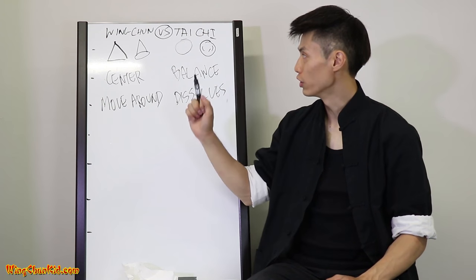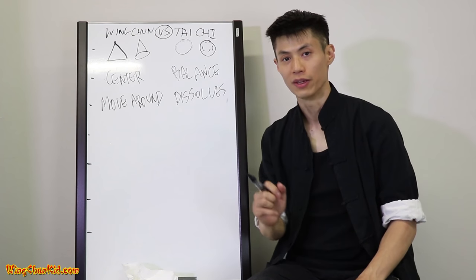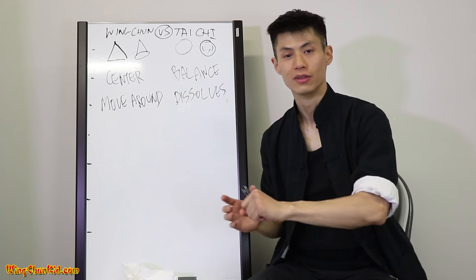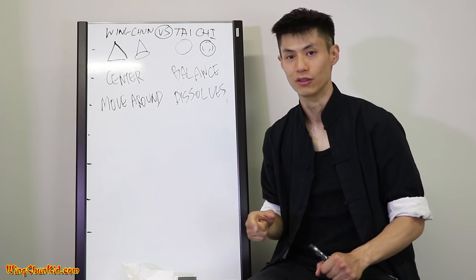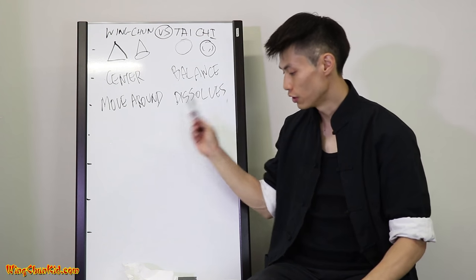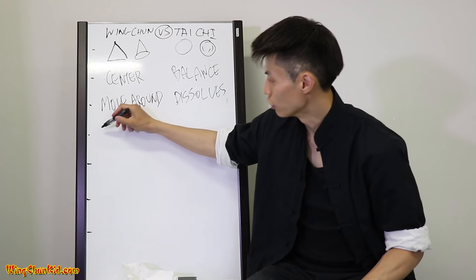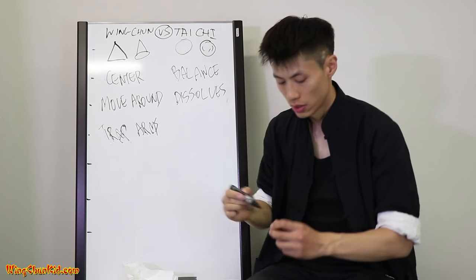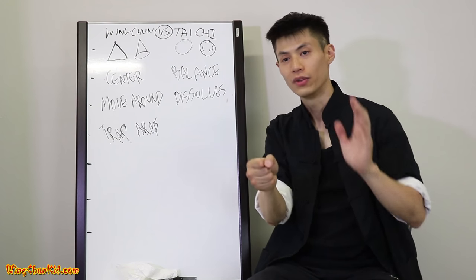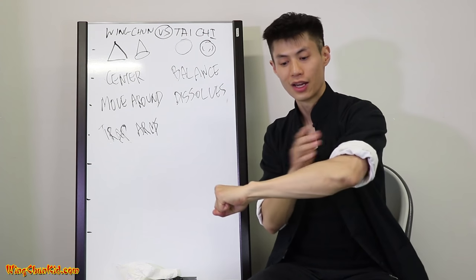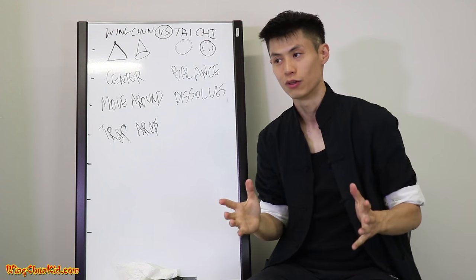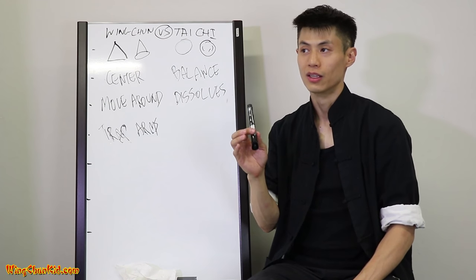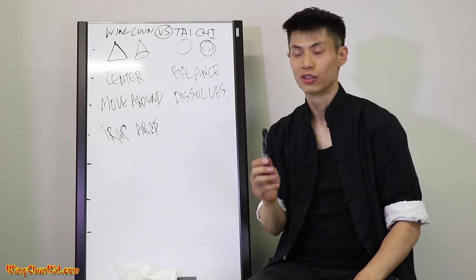Another strategy where Wing Chun and Tai Chi differ is trapping. Trapping means disabling somebody's arms or legs so you can hit them while they can't hit you. Wing Chun's primary trapping is to trap the hands or arms — you trap both hands with one hand and get one hand free to attack the person. That's what Wing Chun mostly does.